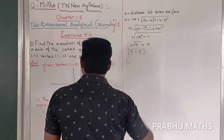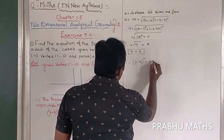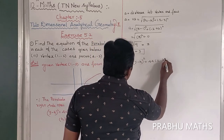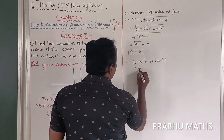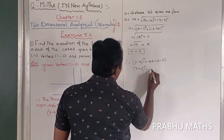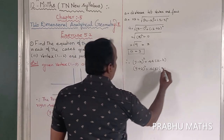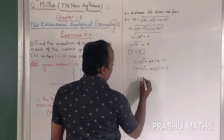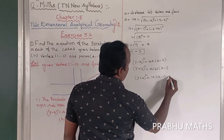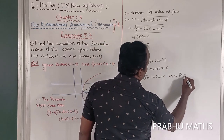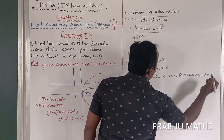Therefore, (y - k)² = 4a(x - h). Substituting k = -2, so minus into minus gives plus 2, and 4a = 4×3 = 12, h = 1. So (y + 2)² = 12(x - 1). This is the parabola equation.